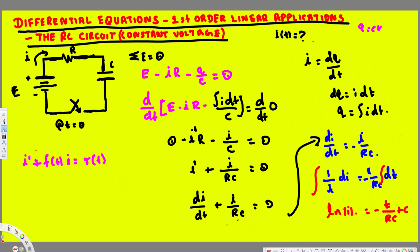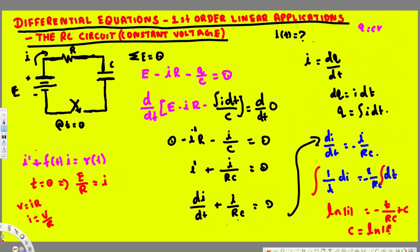This is our general solution. To find the particular solution we need an initial condition. When time equals zero the switch is closed and the voltage is E over R, meaning I(0) equals E over R. Applying that: ln(E/R) equals 0 plus C, therefore the constant C equals ln(E/R).